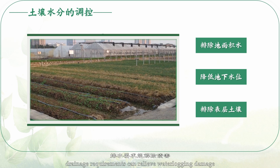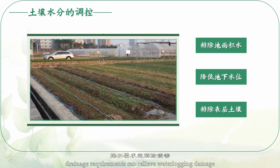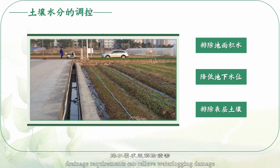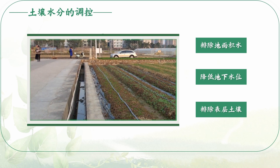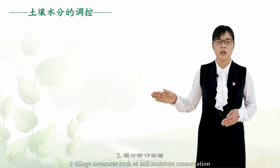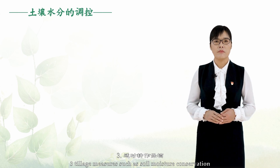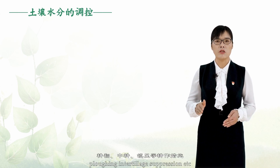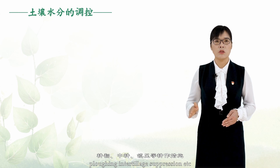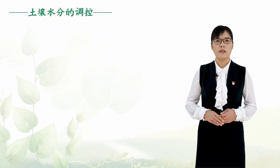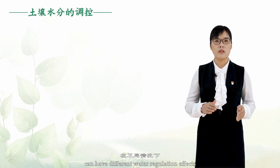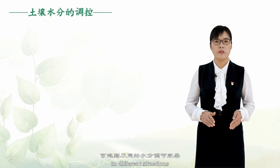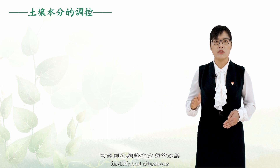At the same time, drainage measures can relieve waterlogging damage. 3. Tillage measures such as soil moisture conservation — including plowing, inter-tillage, and suppression — can have different water regulation effects in different situations.